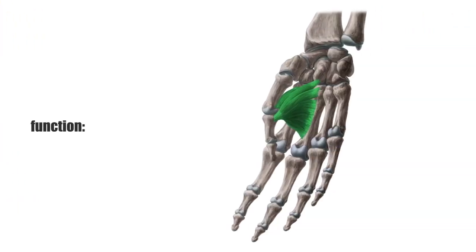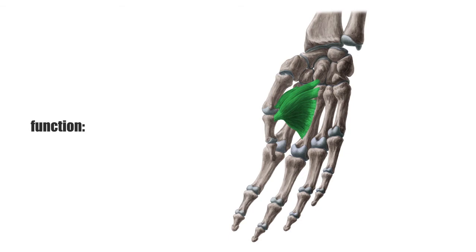The main function of each thenar muscle is associated with their names. The powerful contraction of the adductor pollicis moves the thumb towards the hand, or what we call adduction. The muscle also causes opposition of the thumb. Since the abductor pollicis brevis, adductor pollicis, and flexor pollicis brevis attach more distally at the thumb, they can also perform an extension at the interphalangeal joint.